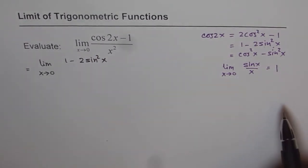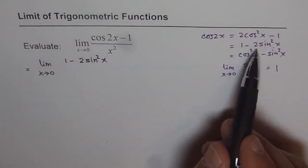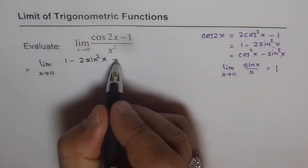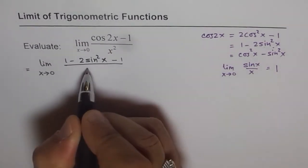Some of you who want, can pause the video, write down the solution and then check the answer. So we are writing cos 2x as 1 minus 2 sin squared x and then we have minus 1 over x squared.